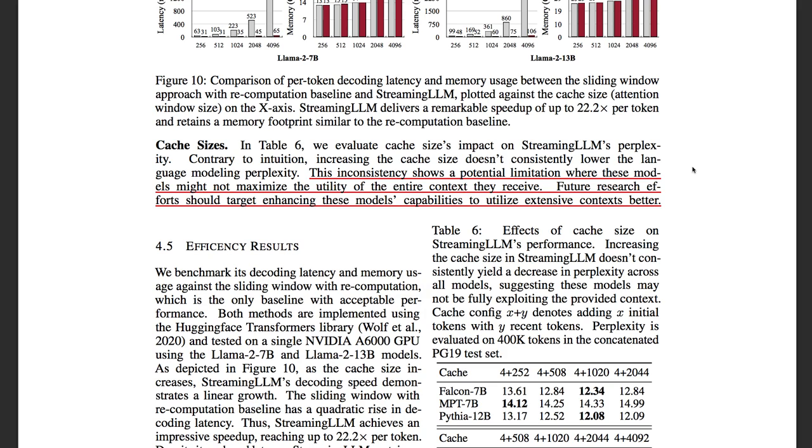which indicates that the model doesn't really fully utilize the entire context. So that is the future research direction that people can work on to further improve model understanding of long context.